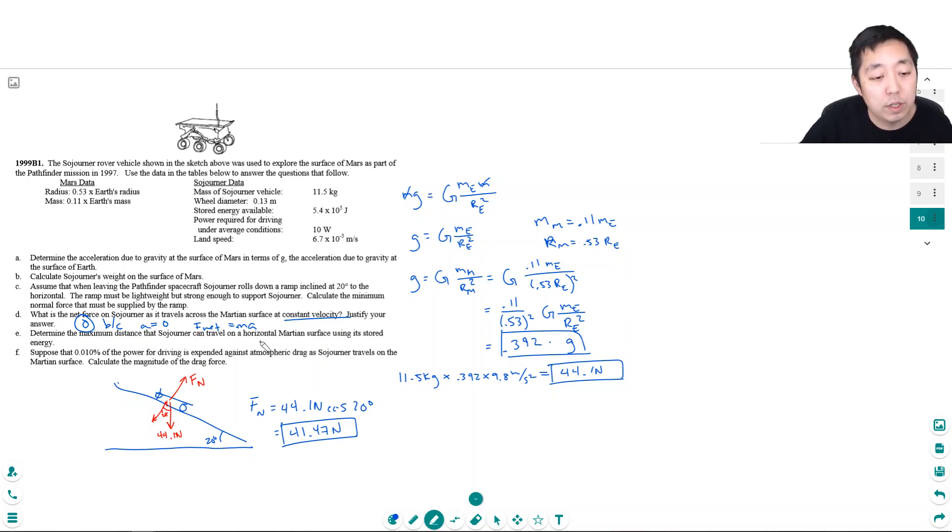Part E: Determine the maximum distance that Sojourner can travel on a horizontal Martian surface using its stored energy. Let's see, this is sort of a power energy question. Its land speed is this. So how long can it use this much energy for? While it's driving, it's using 10 watts of power. So the time it can drive for, the time he can drive is equal to, let me write the equation that I know. Power is energy per unit time. So if I wanted to decipher the time, I'd do energy divided by power. So I would do 5.4 times 10 to the 5th joules divided by its power, which is just 10 watts. And so 5.4 E5 divided by 10 is 54,000 seconds.